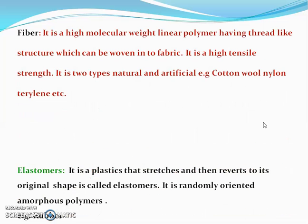The first term we have discussed is fiber. Fibers are high molecular weight linear polymers having a thread-like structure. They can be woven into a fabric. They have high tensile strength and are of two types: natural fibers and artificial fibers.